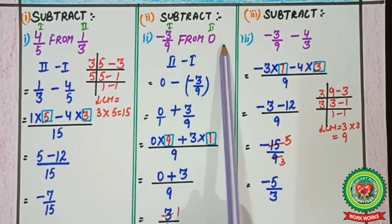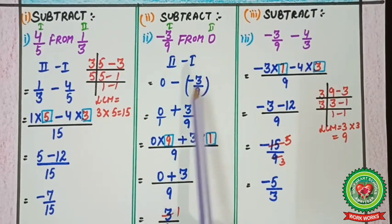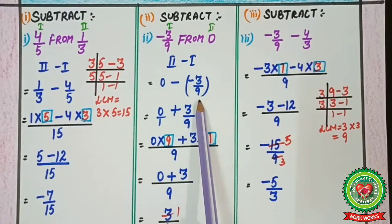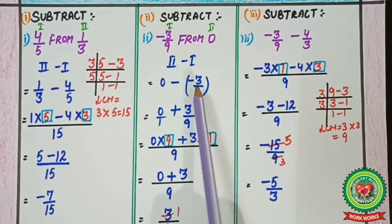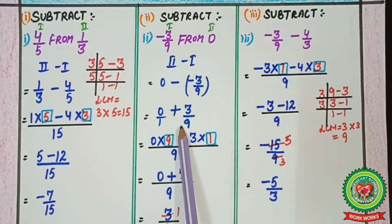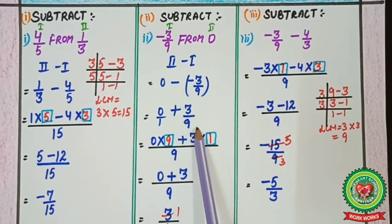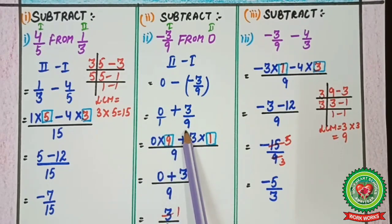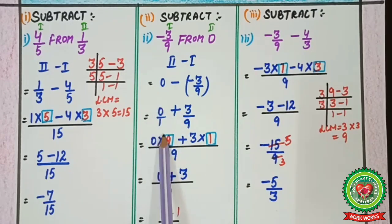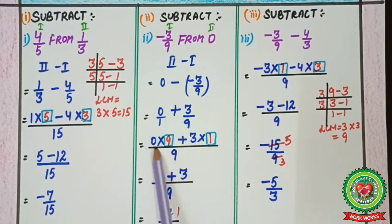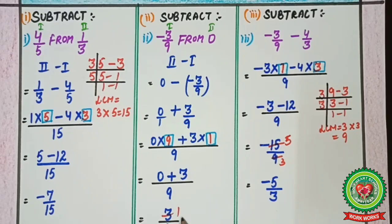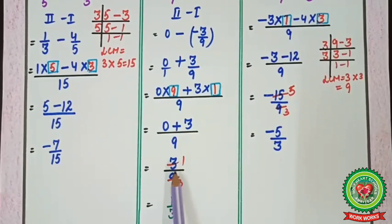Next example: subtract −3/9 from 0. Here −3/9 is the first number and 0 is the second. From means second minus first: 0 − (−3/9). We put a bracket: 0/1 − (−3/9). Outer sign is minus, so inner sign changes to plus: 0/1 + 3/9. LCM of 1 and 9 is 9. So 0 × 9 = 0, plus 3 × 1 = 3. Answer: 3/9, which simplifies to 1/3.